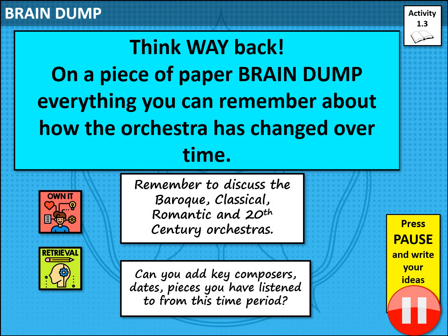Now it's time for you to think way back. On that piece of paper, section a little bit of it off and brain dump everything you can remember about how the orchestra has changed over time. Within that, remember you should be discussing the Baroque period, the classical, the romantic, and the 20th century. Could you add some key composers, dates, and pieces you've listened to from each period? Give yourself two minutes — pause the video now.